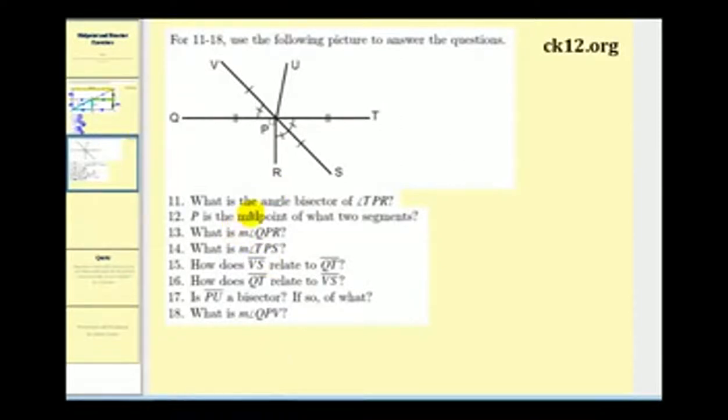The first question is what is the angle bisector of angle TPR? Here's angle TPR. Notice the two adjacent angles that would make up angle TPR have one hash mark through them, and therefore angle RPS and angle SPT have the same measure and are congruent. So segment PS would have to be the angle bisector of angle TPR.